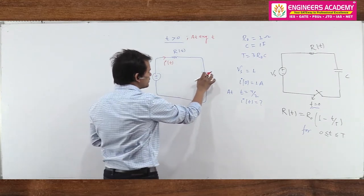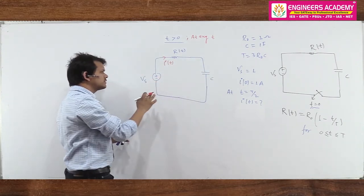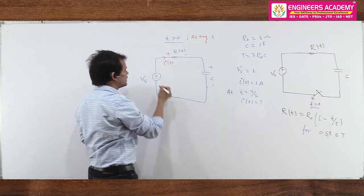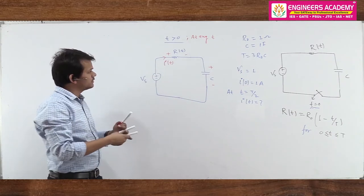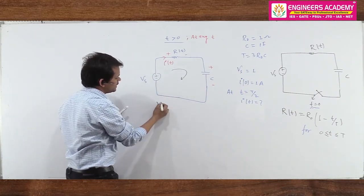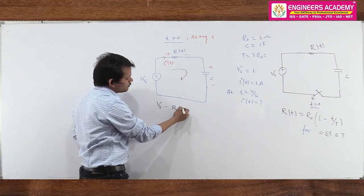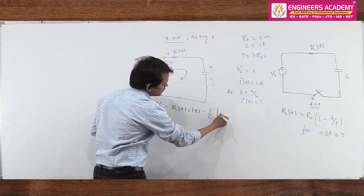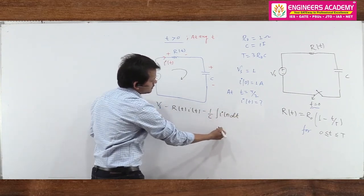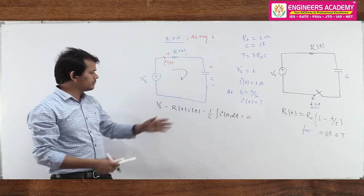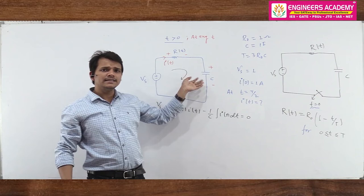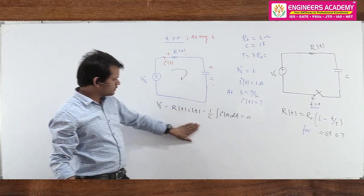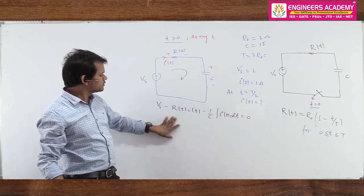Applying KVL: every element — capacitor, inductor, resistor, battery — has a potential difference with a sign. The KVL equation is: Vs - R(t)·i(t) - (1/C)∫i(t)dt = 0. The voltage across the capacitor is (1/C)∫i(t)dt, since the current through the capacitor is i = C·dV/dt. So we need to solve this integral-differential equation.